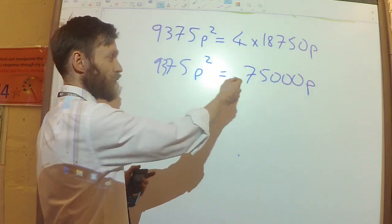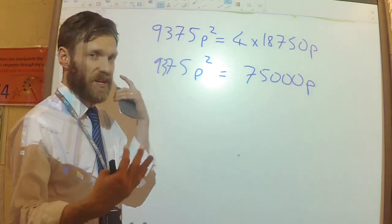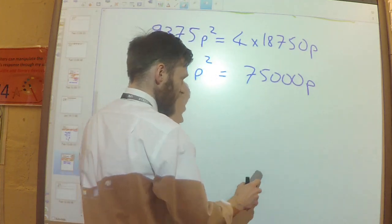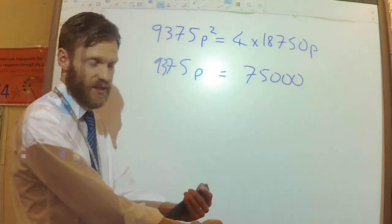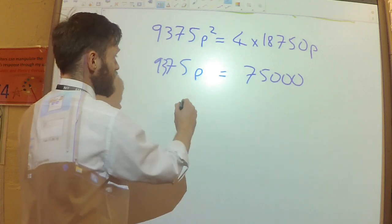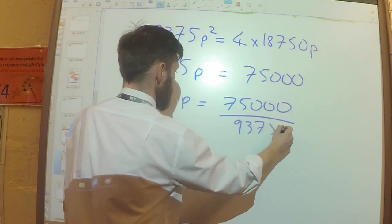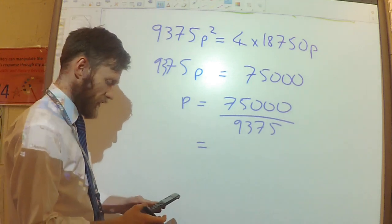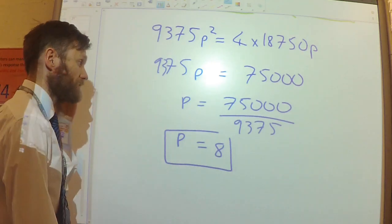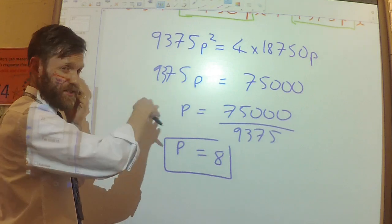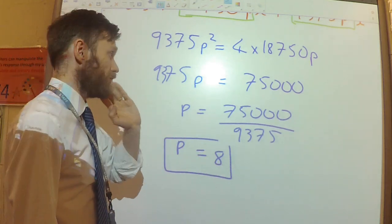Because I know p cannot equal 0, I'm going to divide both sides by p rather than solving it as a full quadratic — I won't lose any solutions this way. Then dividing by 9,375 gives p equals 8. You could also put everything on one side and factorise, giving p equals 0 or p equals 8, but since p is not 0, we get p equals 8.